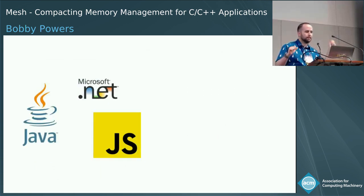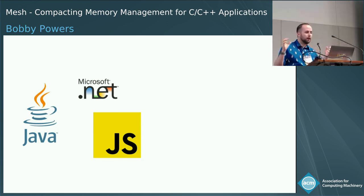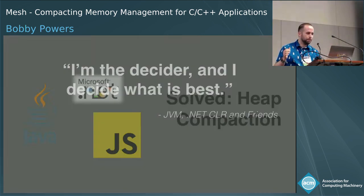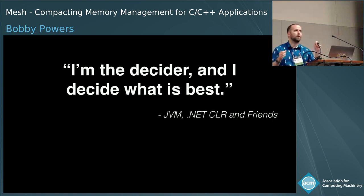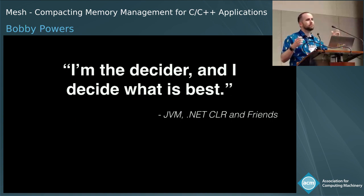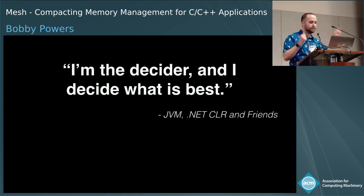In garbage collected languages like Java, C-sharp, and JavaScript, this is not a problem, because it is solved with something called heap compaction. One of the reasons these languages can perform heap compaction is because the runtime itself is the sole arbiter of references and can precisely identify references in memory.